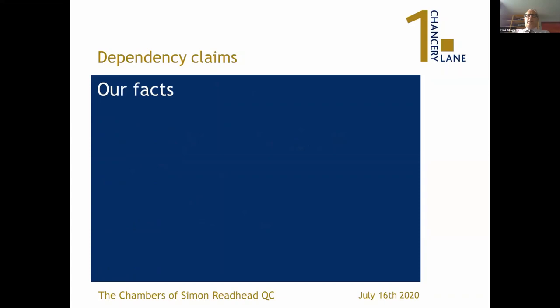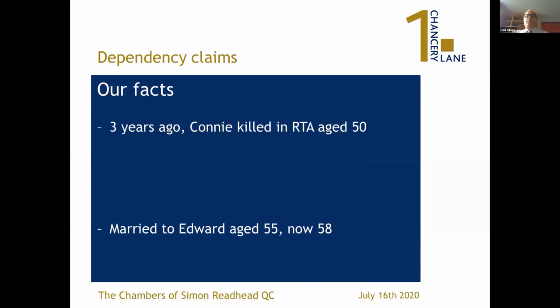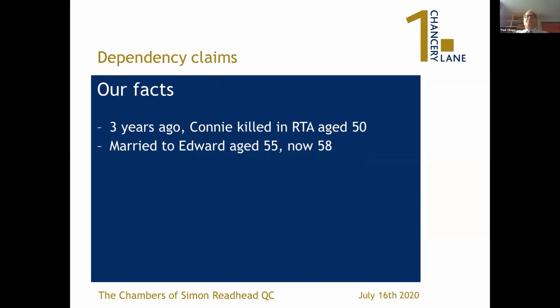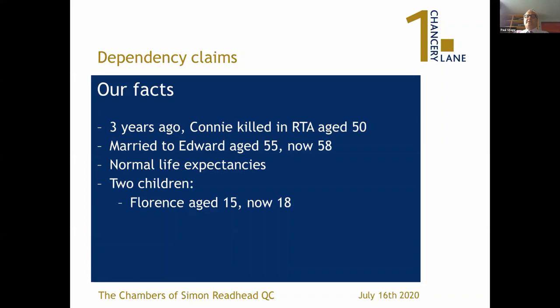Looking at income dependency, rather than a dry discussion of principles, I thought it would be helpful just to take a concrete case of moderate complexity. We have a lady called Connie who was killed in a road traffic accident at the age of 53, and she was married to Edward who was 55 then and is now 58 years old. Edward used to work in the city but now works locally in an art gallery. Both had before Connie's untimely death normal life expectancies. They have two children: Florence who was 15 when her mother died and is now 18, and Seth who was 12 and is now aged 15.